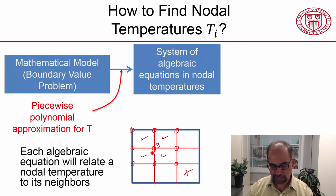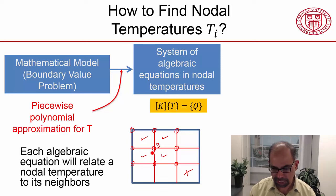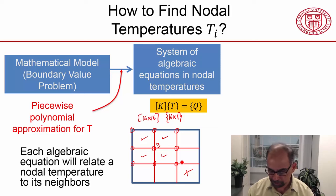Once the solver generates those algebraic equations, it thinks of it in the matrix form. The temperature vector in this case will have 16 temperature values, so this will be a vector with 16 rows in one column. The stiffness matrix will be a 16 by 16 matrix, and similarly, you can think about the dimension of Q.